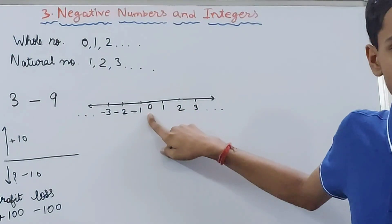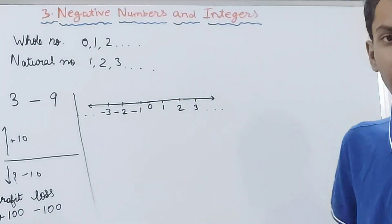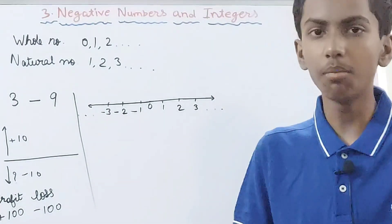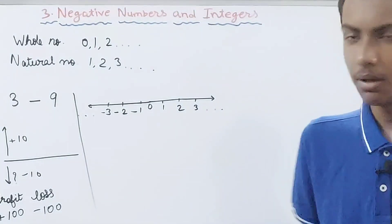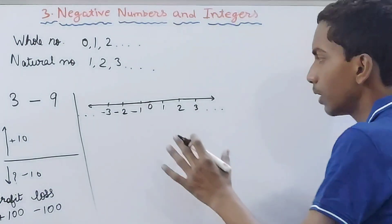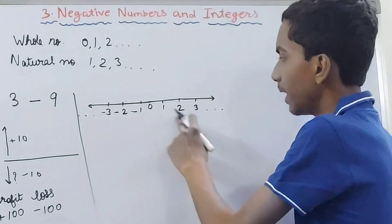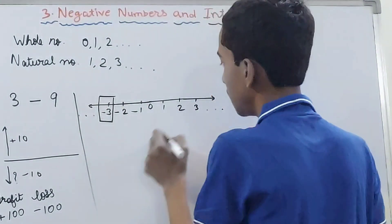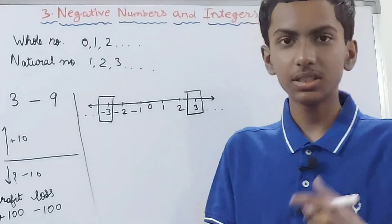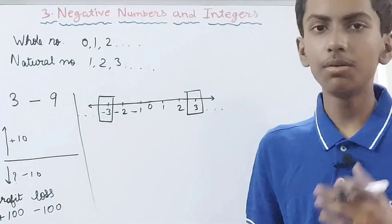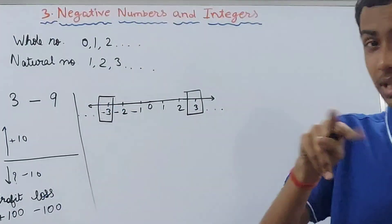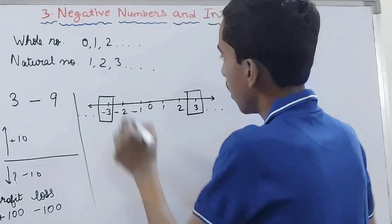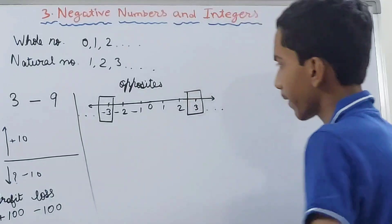Now we'll see how to compare integers. Take a look at these numbers: 1, 1, 2, 2, 3, 3 — same values, different signs. Any two numbers like minus 3 and plus 3 have the same absolute value — that is, the number without the sign. Two numbers with the same absolute value on opposite sides of 0 with different signs are called opposites. So 3 and minus 3 are called opposites.